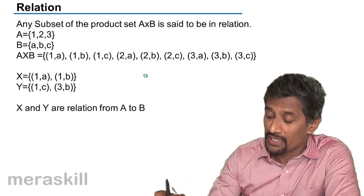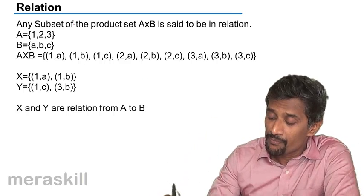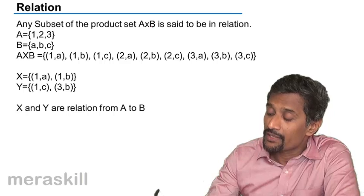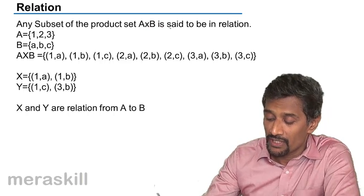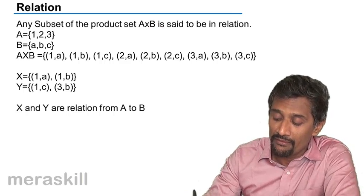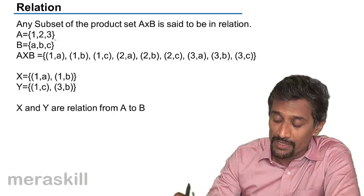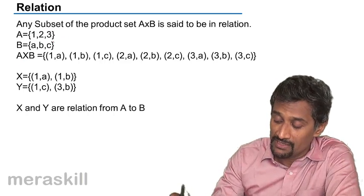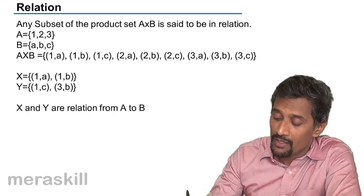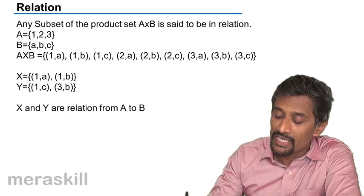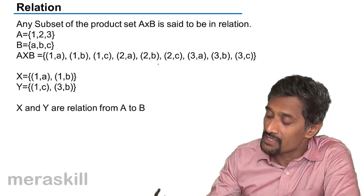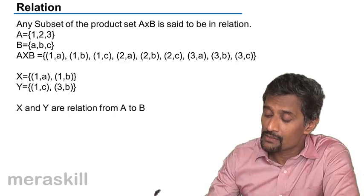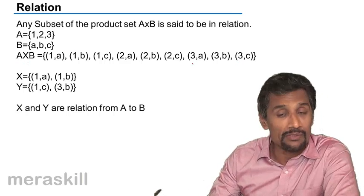We mentioned what a relation is. Any subset of the product set A cross B is said to be a relation. So if you have A: 1, 2, 3 and B: A, B, C, then A cross B is {1A, 1B, 1C, 2A, 2B, 2C, 3A, 3B, 3C}. These are all the elements, and this whole thing is A cross B.